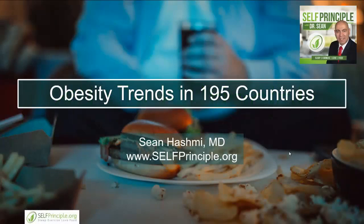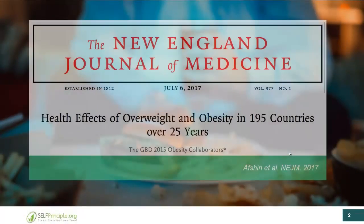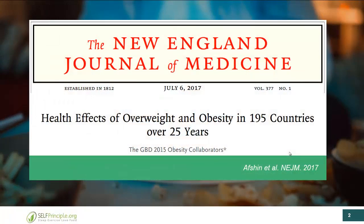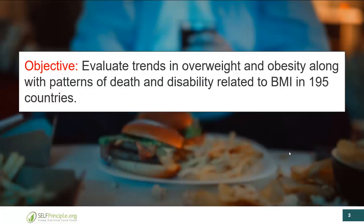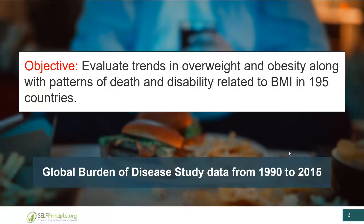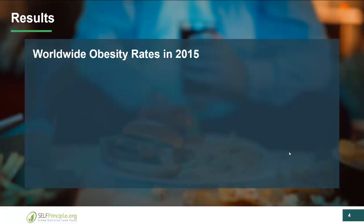Let's take a look at the obesity trends occurring in 195 countries and see what we can learn. This was a fascinating study that came out in 2017, looking at trends in obesity across 25 years of data in over 195 countries. They wanted to see what's going on in terms of death and disability related to simply being overweight, with data collected from 1990 to 2015.